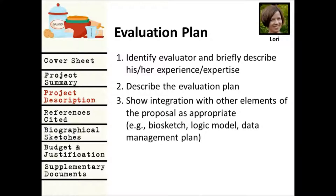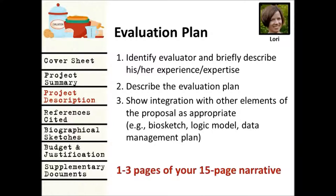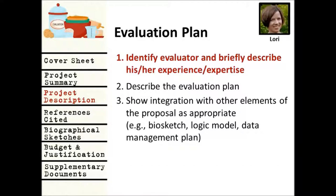So what goes in an evaluation plan? The evaluation section is made up of three main elements: first, information about your evaluator; then the evaluation plan itself — the details of the plan; and you want to show integration with other aspects of your proposal. Note that the evaluation section is just one to three pages of your 15-page narrative, and three would be quite a bit — they tend to be maybe around a page and a half. The first thing you want to do in your evaluation section is identify who is going to evaluate your project and briefly describe that person's experience and expertise.